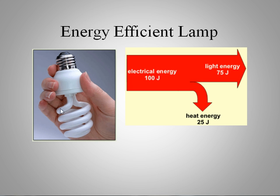Let's try a different type of lamp, one of these spiral fluorescents. Say we put 100 joules of electrical energy in, and we get 75 joules of light energy out with only 25 going to heat. If you've ever touched these, they don't get that hot. The efficiency in this case is 75 over 100 or 75 percent.